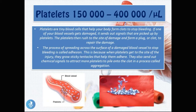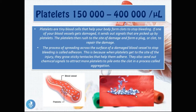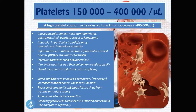When platelets get to the site of injury they grow sticky tentacles to help them adhere, and send out chemicals to attract more platelets in a process called aggregation. As you can see in the diagram, a blood vessel has been ruptured and the platelets rush to the surface of that injury, gluing the ruptured area back together using their tentacles and recruiting more platelets to form a plug and stop the bleeding.